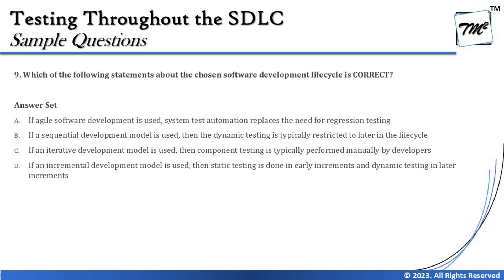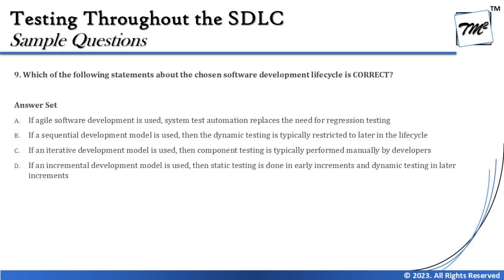Option B says: if a sequential development model is used, then dynamic testing is typically restricted to later in the life cycle. With sequential models, dynamic testing is conducted once, at the end. Initially we try to be as static as possible, and until the entire code is implemented we do not kick off dynamic testing — it happens once the development is completed. This looks like a very good option.